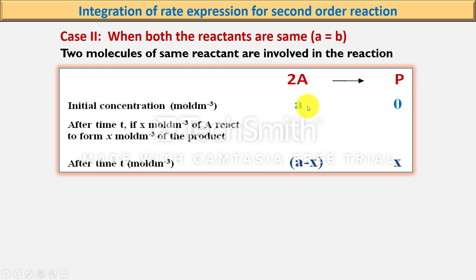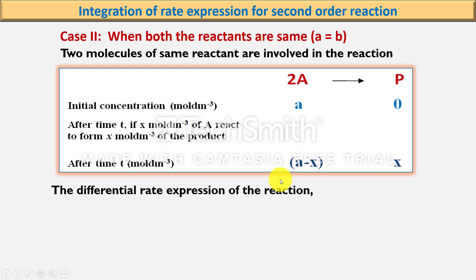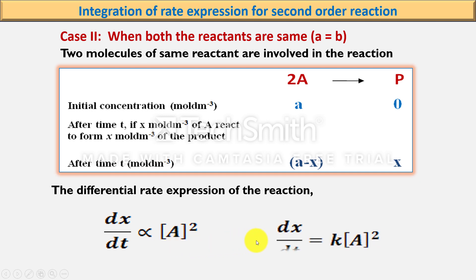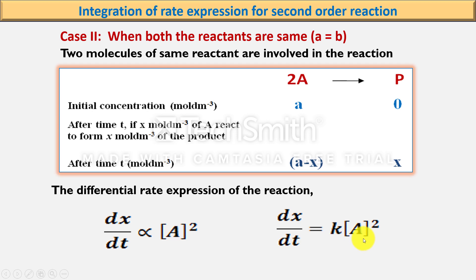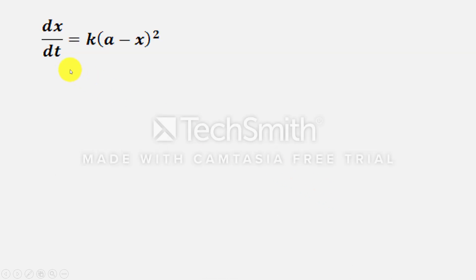Let A mole per dm³ be the initial concentration of reactant A. After time t, if x amount of product is formed, the remaining concentration of reactant A will be A−x. The differential rate expression will be dx/dt ∝ [A]², or dx/dt = k(A−x)², where k is the velocity constant.